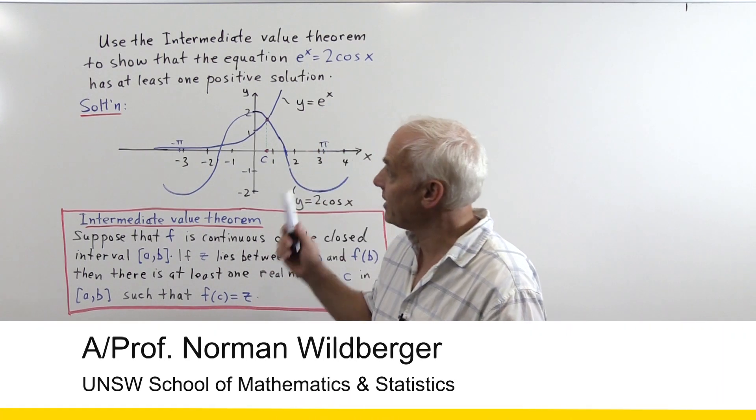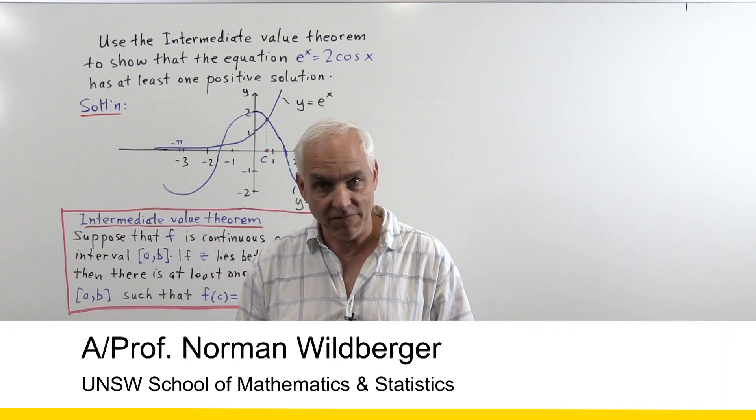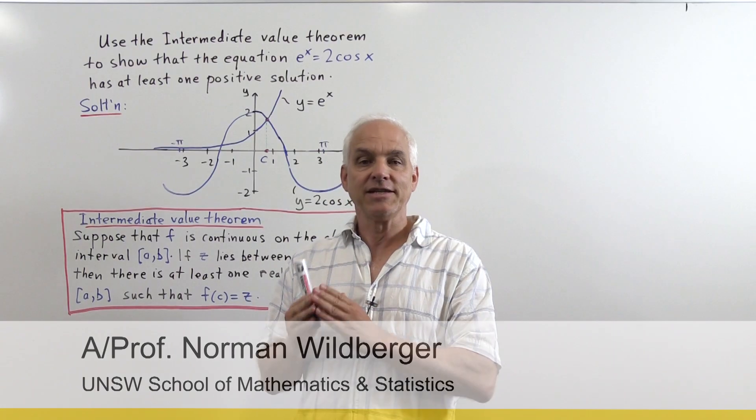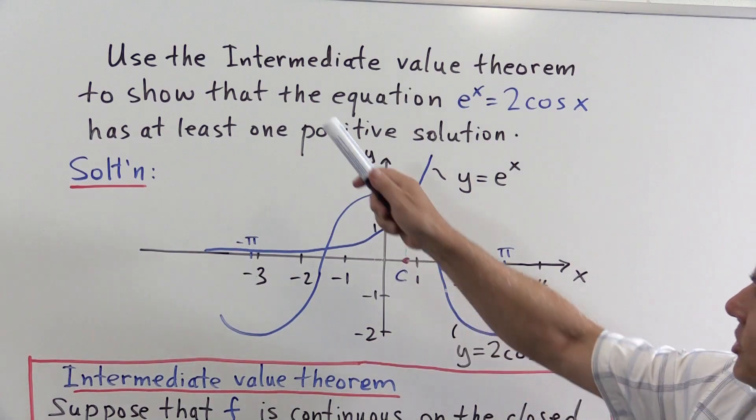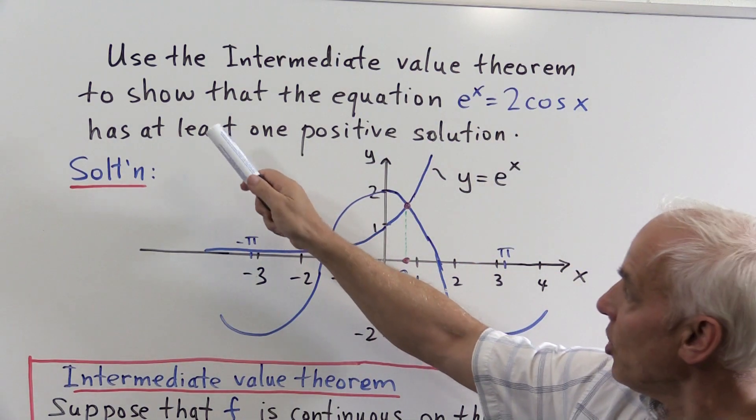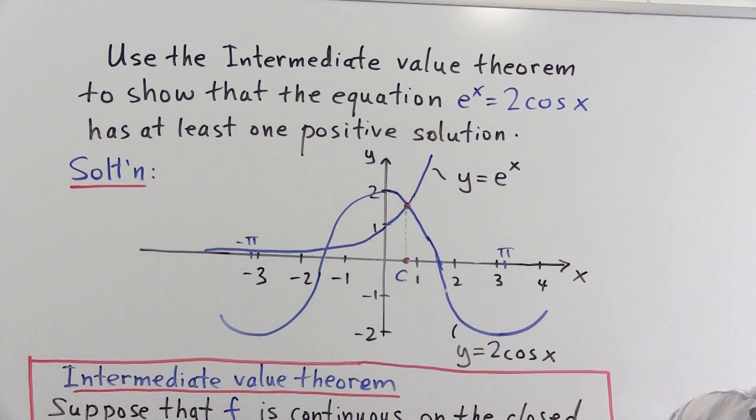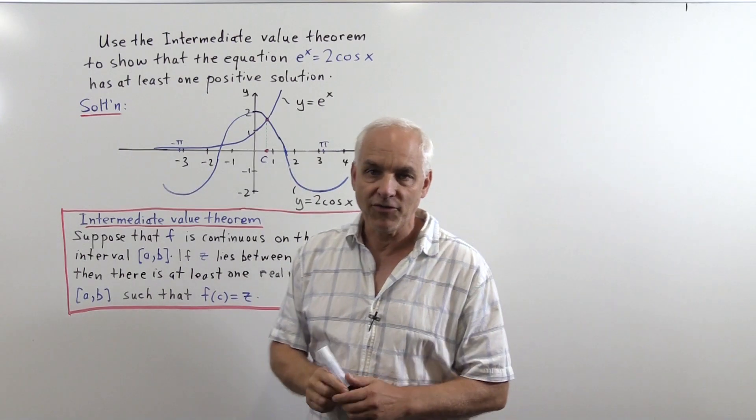In this problem, we're going to look at an application of the Intermediate Value Theorem to show the existence of a solution to an equation. The question is: use the Intermediate Value Theorem to show that the equation e^x = 2cos(x) has at least one positive solution.